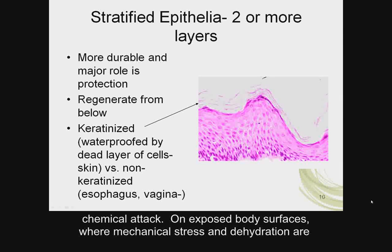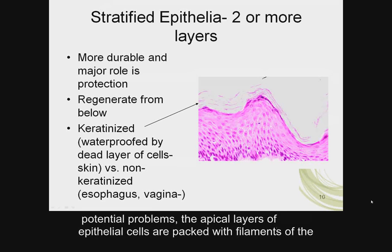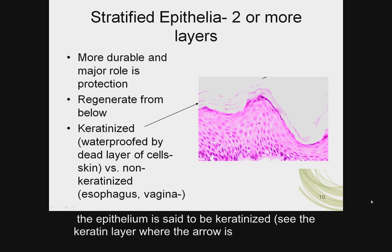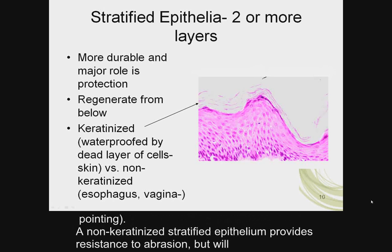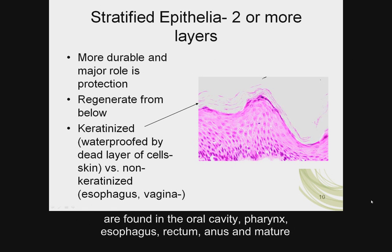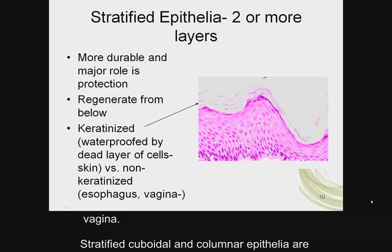On exposed body surfaces where mechanical stress and dehydration are potential problems, the apical layers of epithelial cells are packed with filaments of the protein keratin. As a result, the superficial layers are both tough and water-resistant, and the epithelium is said to be keratinized. A non-keratinized stratified epithelium provides resistance to abrasion but will dry out and deteriorate unless kept moist. Non-keratinized stratified squamous epithelia are found in the oral cavity, pharynx, esophagus, rectum, anus, and mature vagina.